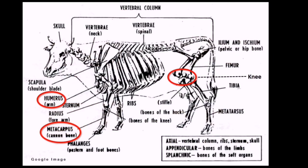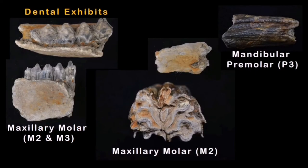You can appreciate this structure based on this anatomical diagram. The humerus and metacarpus, or cannon bone, are located at the front limb or front leg. The patella — the kneecap — is at the knee area as labeled. These are the dental exhibits presented to me: the maxillary molar and mandibular premolar.